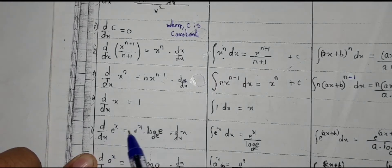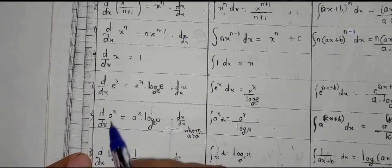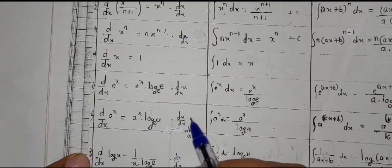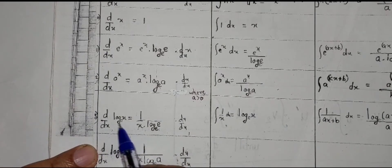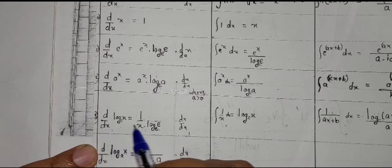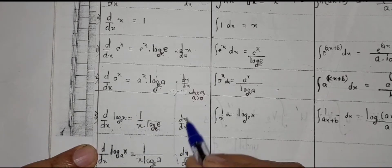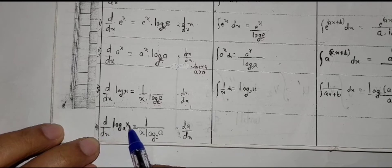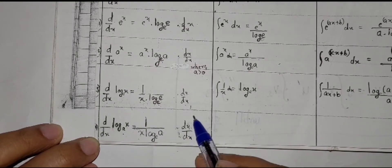Derivative of exponential functions: d upon dx of e raised to x is e raised to x times log e to the base e, times dx upon dx, which after cancelling gives 1. Similarly, d upon dx of a raised to x is equal to a raised to x times log a to the base e, times dx upon dx. And d upon dx of log x to the base e, times dx upon dx, which after cancellation also gives 1.